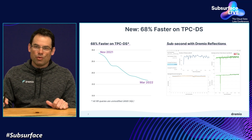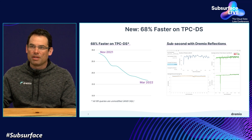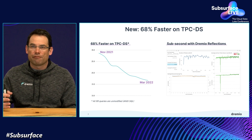Over the last six months, we've been investing tremendously in the performance of Dremio Sonar. If you compare the performance today to what it was in November of 2021 — less than six months ago — you'll see that Dremio is now 68% faster on the common TPCDS benchmark. Not only that, but Dremio is now the only query engine that supports all 99 queries of the benchmark, completely unmodified, standard ANSI SQL.